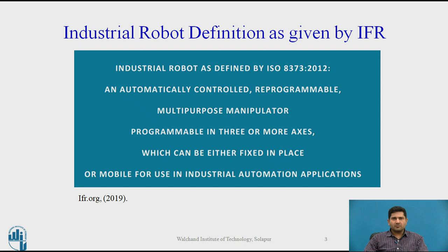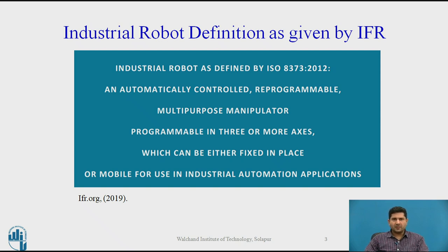Let me recall the definition of industrial robot which we saw in the previous video. The industrial robot is defined as an automatically controlled, reprogrammable, multi-purpose manipulator. It can be programmable in 3-or-more axes. It can be either fixed in place or mobile and is used for industrial automation applications.